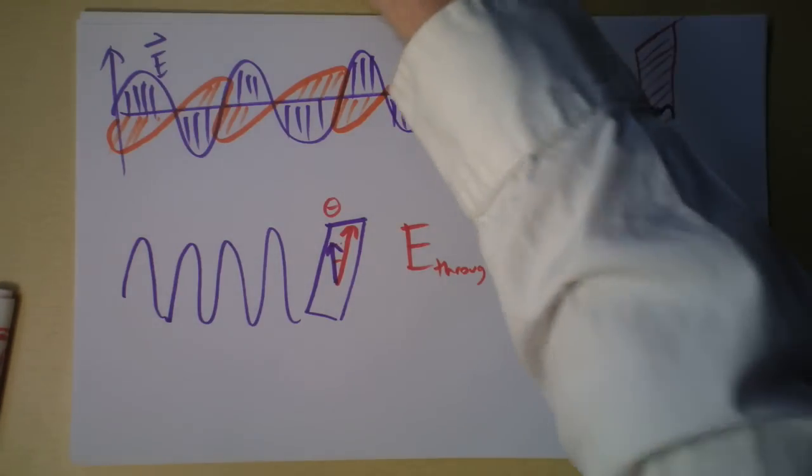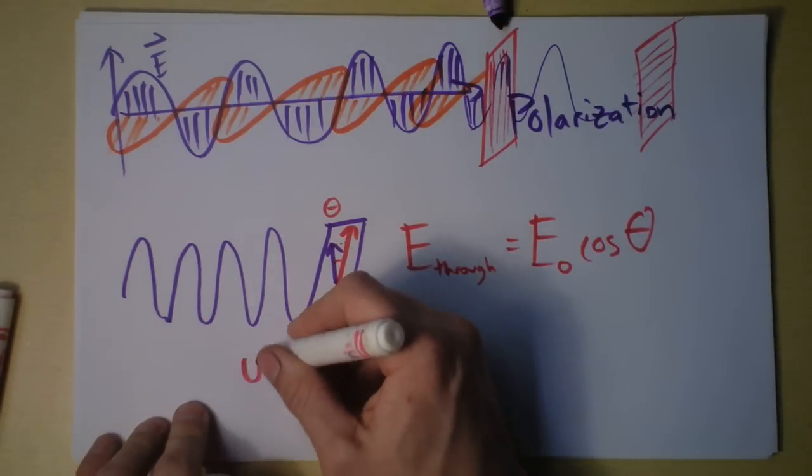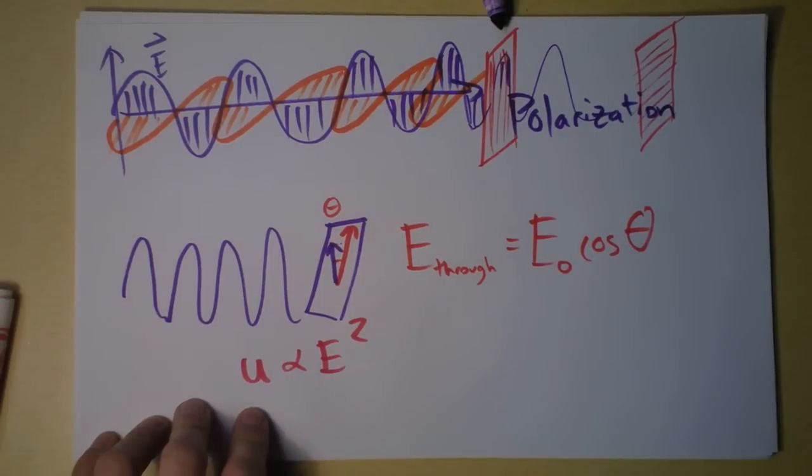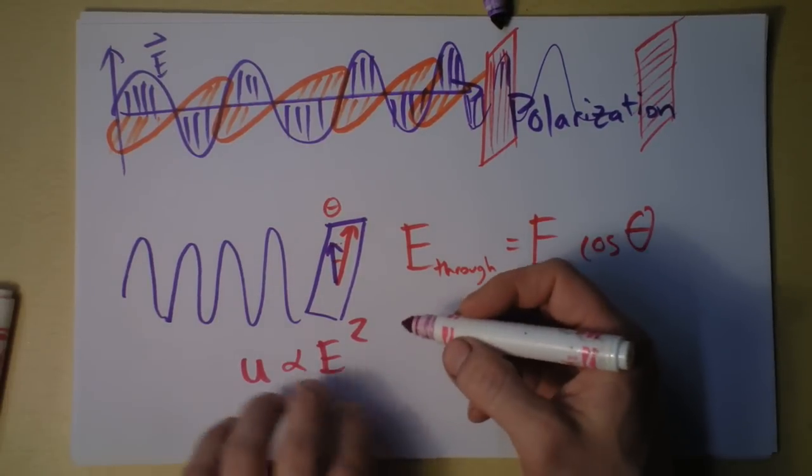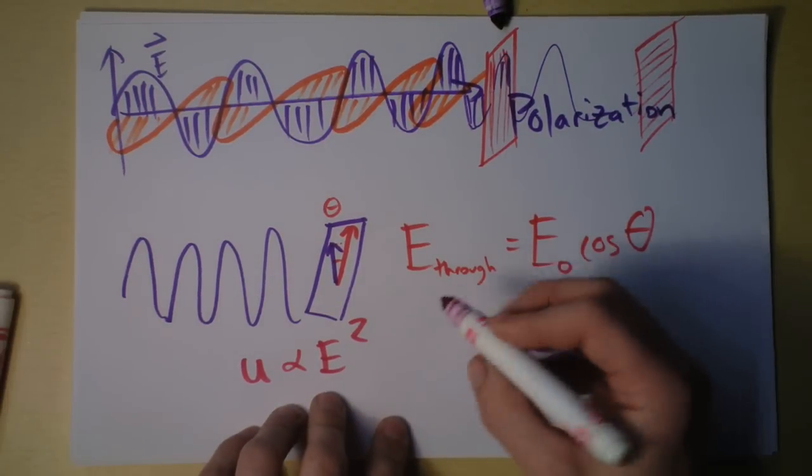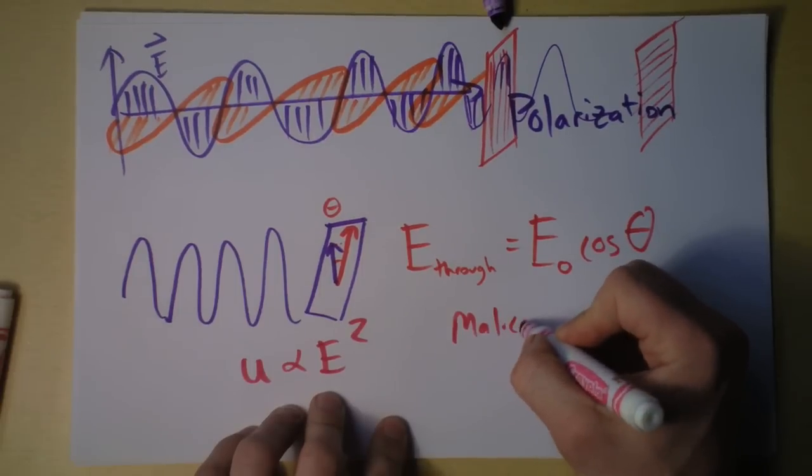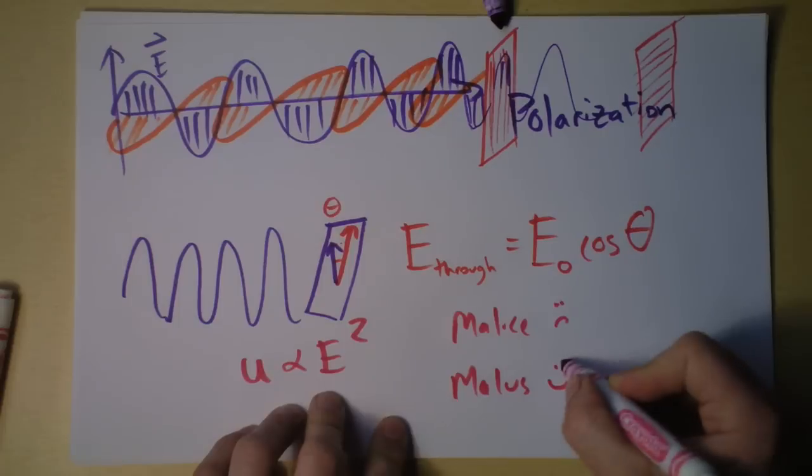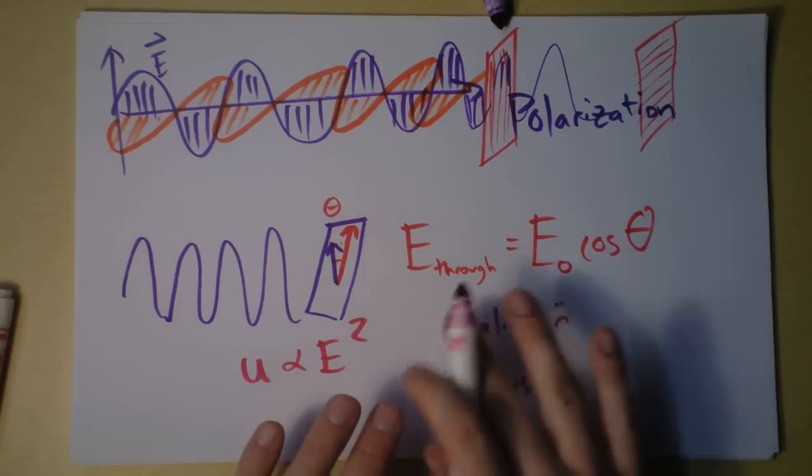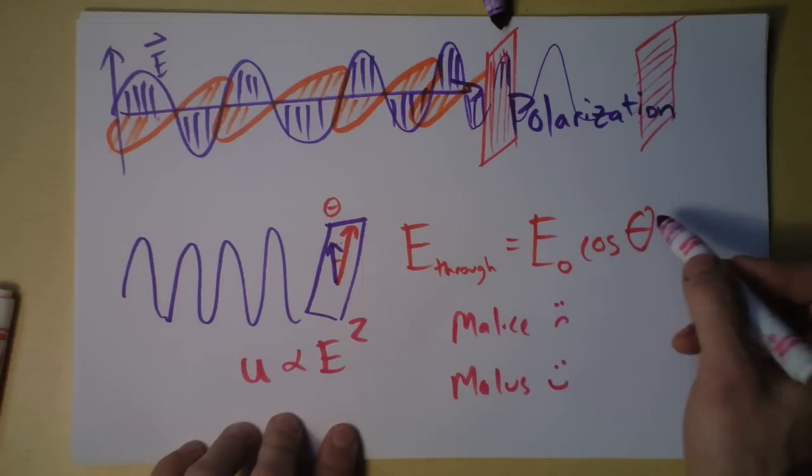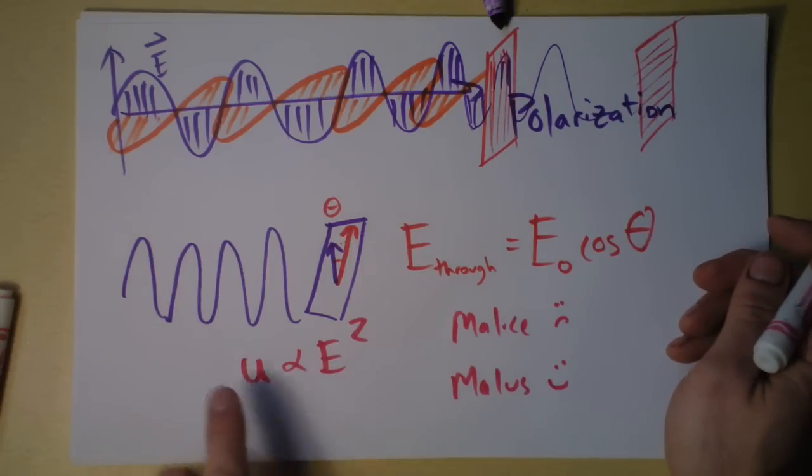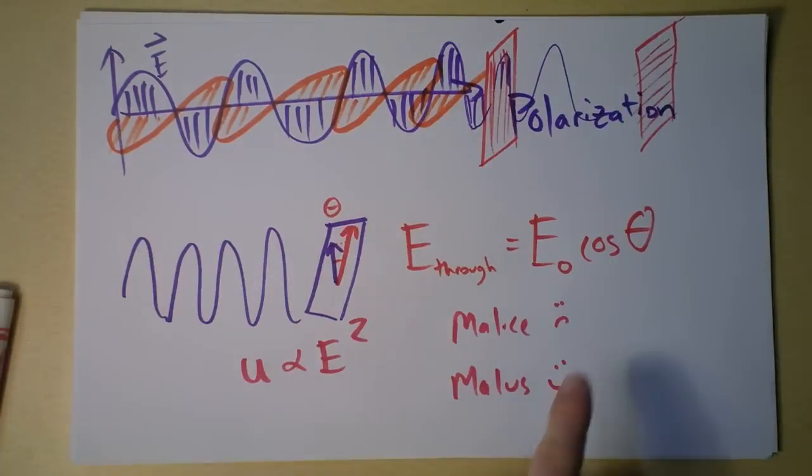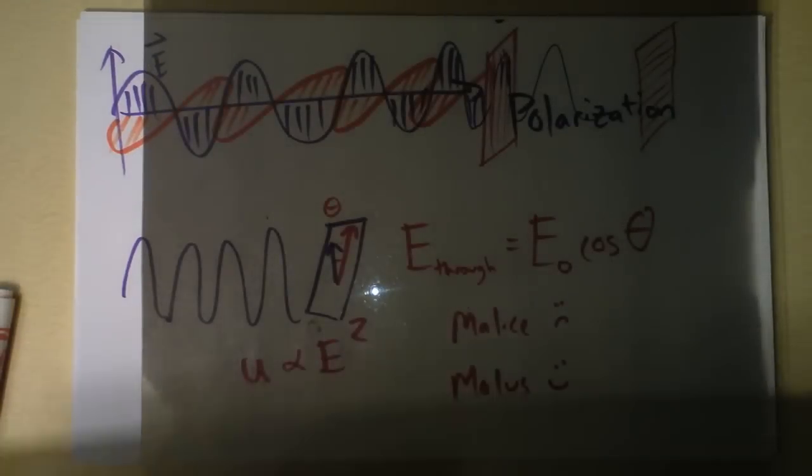And I'm going to say that the electric field that gets through is the electric field initial times the cosine of the angle between the initial electric field and the polarization filter. I'm going to be taking the component of the existing electric field that's along the polarization direction. It's just a little bit of trigonometry. But remember that the actual light intensity, like energy density, is proportional to electric field squared. So we know, well, it's called the law of Malus. And the law of Malus turns out that we're just going to be squaring this to find out what intensity of light gets to make it through.